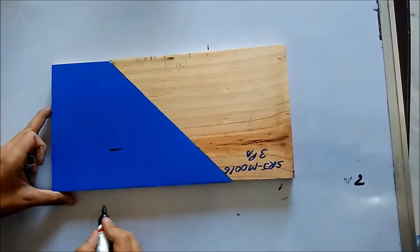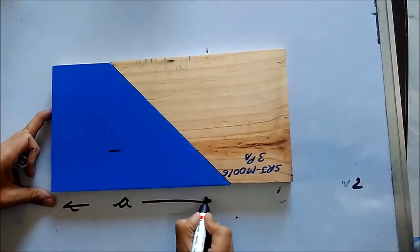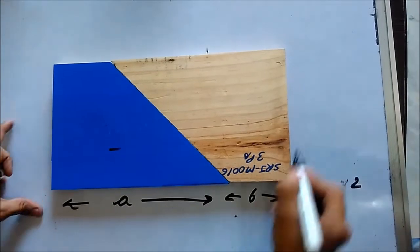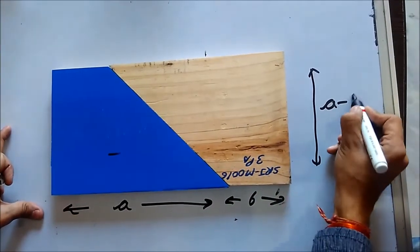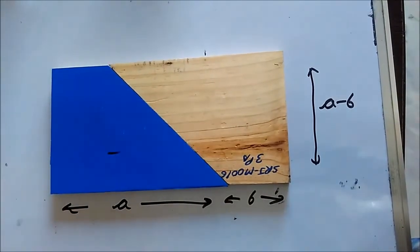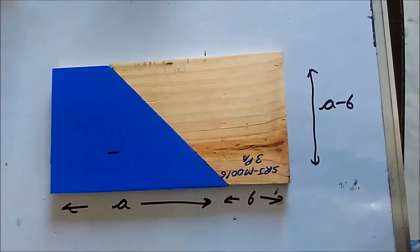So when I arrange this particular thing like this, this whole length will be equal to a, and this length will be equal to b, and this leftover length will be equal to a minus b. This forms a rectangle when you carefully observe. It has all the sides equal to 90 degrees and unequal length.